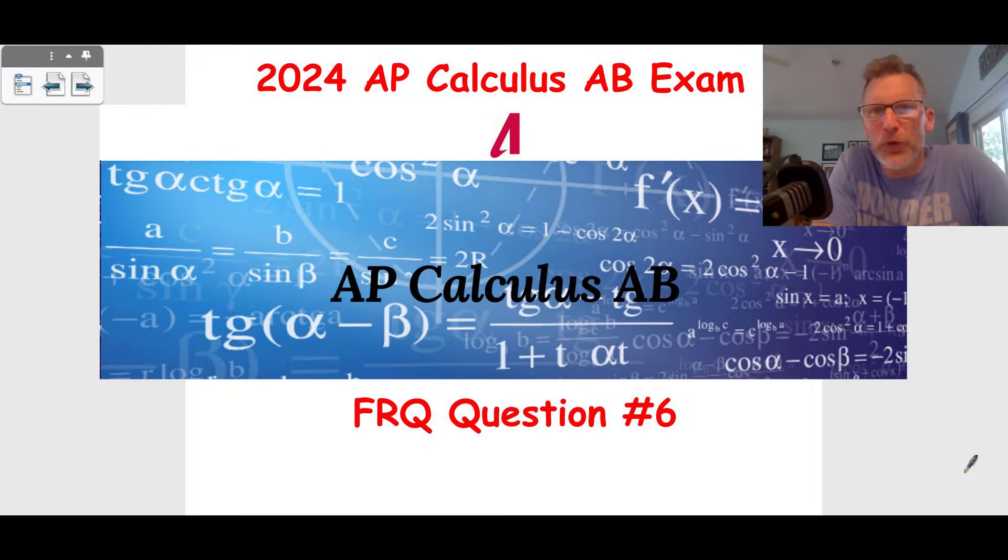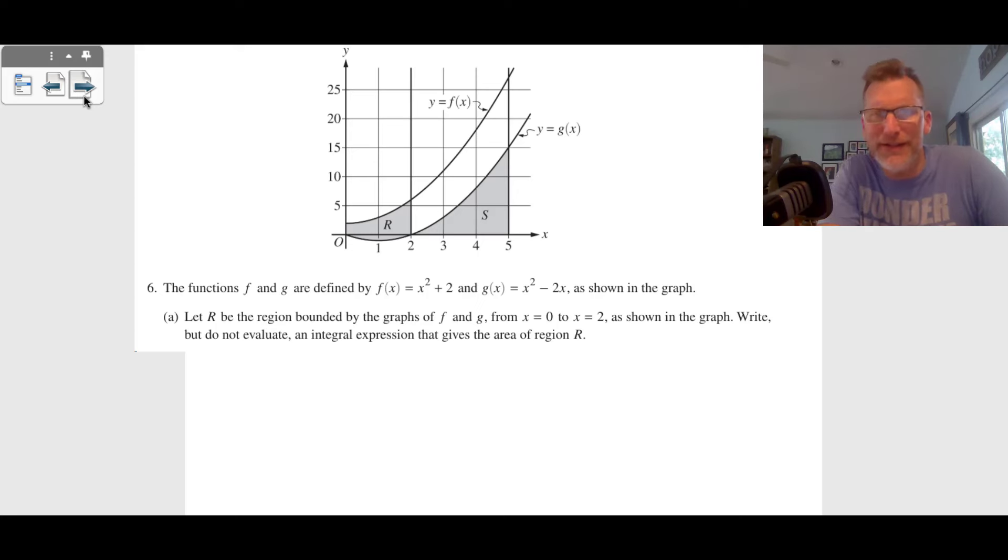Hey, this is Mr. Aiden. This is the 2024 AP Calculus AB exam, the final question - free response question number six. You can see we have a graph with region R, region S, and an area underneath. We have f(x) as this curve on the top, g(x) as this curve on the bottom. They want us to write an expression but don't evaluate for the area of region R.